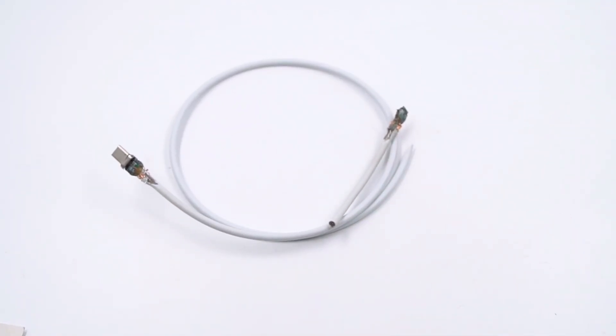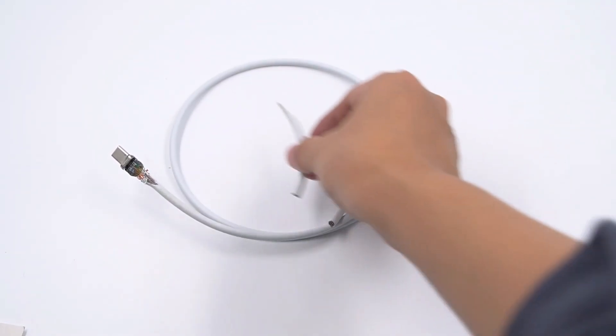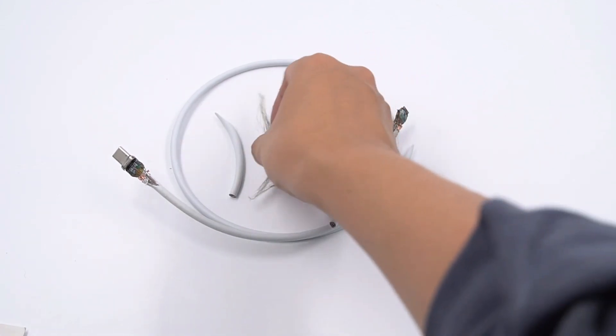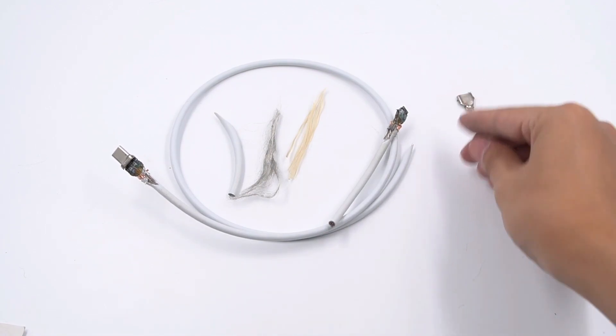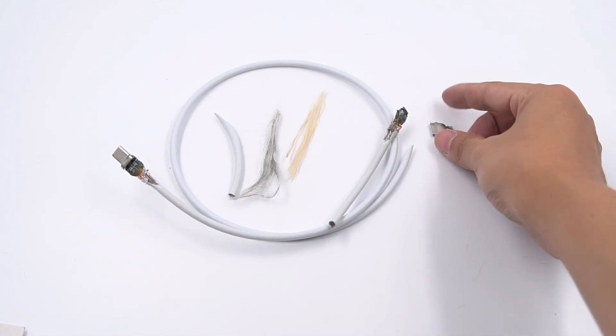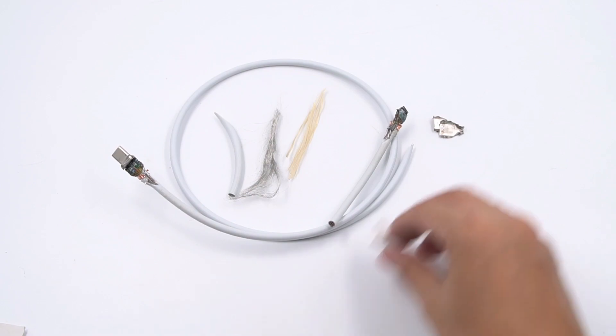So, that's all for today's teardown. This internal structure of cable is simple and clear. The e-marker chips make it have powerful performance. It is equipped with steel sleeve, injection molding, copper foil, metal shield, kevlar fiber, etc.